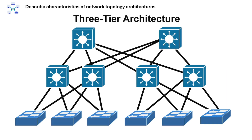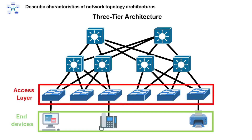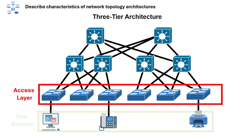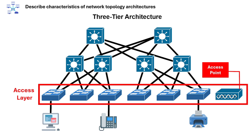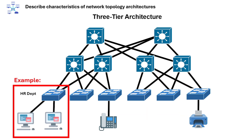Next is three-tier architecture. The access layer's purpose is to connect end devices like PCs, printers, and phones to the network. Access layer devices can be access switches or sometimes wireless access points. The access layer's functions include port security, VLAN tagging, and Power over Ethernet. An example is a switch in a department that all employees plug their PCs into.